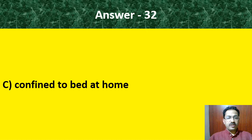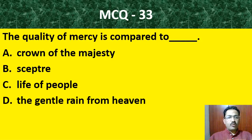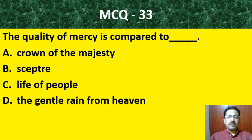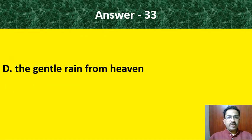MCQ question number 30: Satish could not talk freely with anyone because — his neighboring friends teased him, he was operated on his leg, he was unable to hear a sound, or he was suffering from bouts of fever. The correct answer is he was unable to hear a sound. MCQ 31: Grandma was happier — in town, village, trees, or home. The answer is trees.